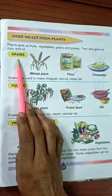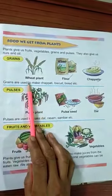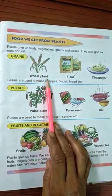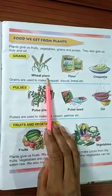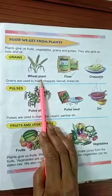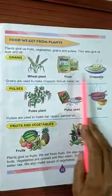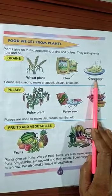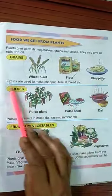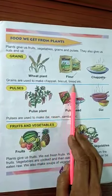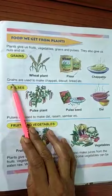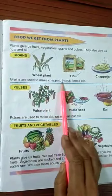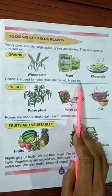अब बढ़ते हैं grains की ओर। Grains जैसे गेहूं और चावल — यहाँ wheat plant का चित्र दिया हुआ है। Wheat plant से हमें गेहूं प्राप्त होता है, गेहूं से आटा बनता है और आटे से रोटी, पूड़ी, पराठा बनते हैं। Grains are used to make chapatis, biscuits, bread, etc.